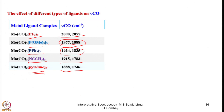If co-ligands are good pi acceptors competing with CO, the stretching frequency doesn't drop considerably. But if they are poor pi acceptors or only sigma donors, stretching frequency drops considerably because more electron density flows into the pi star of the remaining CO ligands. This relationship can also provide information about the position of these ligands in the spectrochemical series.